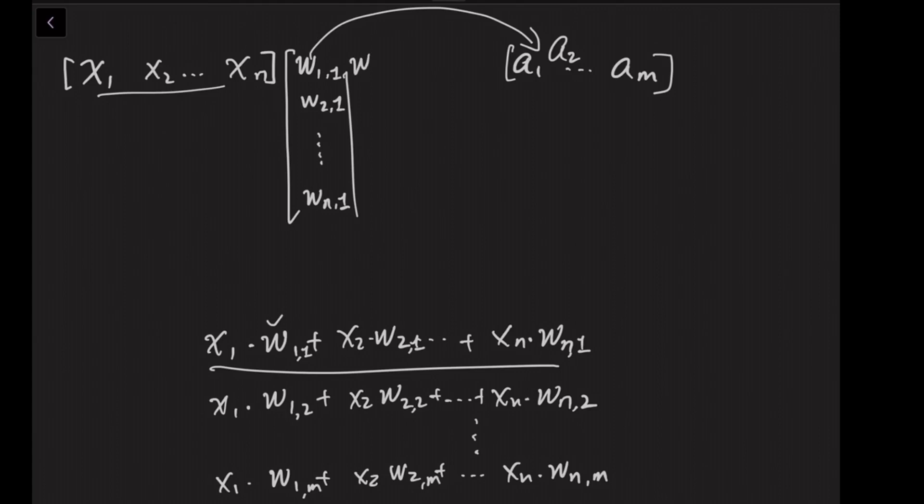We can write this out for the second one: w12, w22, go all the way down until wn2. The multiplication of x with this vector will give us a2. We can go all the way until we reach the last output, the mth: w1m, go all the way down to wnm.